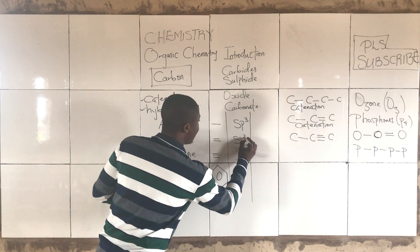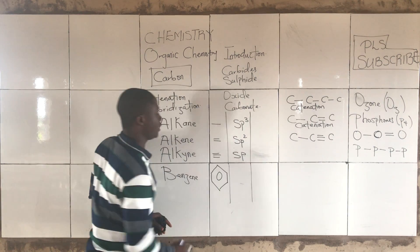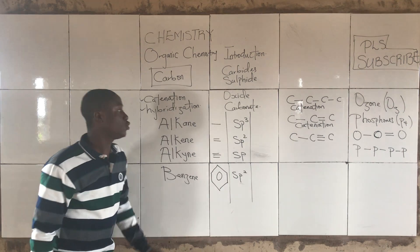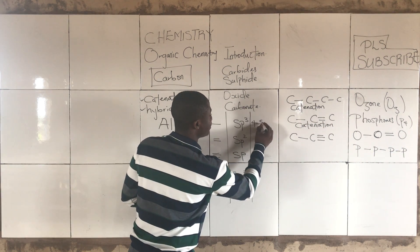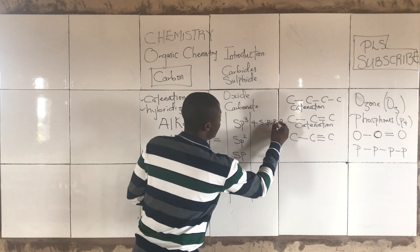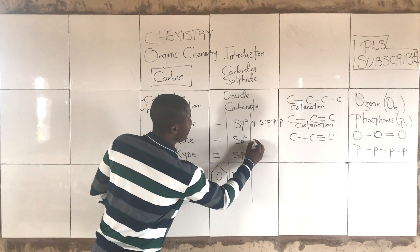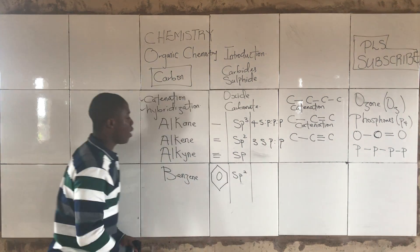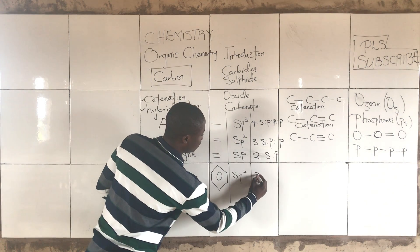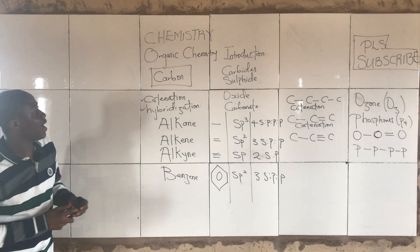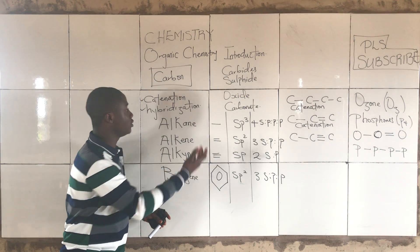For alkenes, they are sp2 hybridized, while alkynes are sp hybridized. Benzene is aromatic in nature and is also sp2 hybridized. For alkanes (sp3), the number of hybridized orbitals is 4 — that is s, p, p, p. For alkenes it is 3 — s, p, p. For alkynes it is 2 — s, p. And for benzene it is 3 — s, p, p.